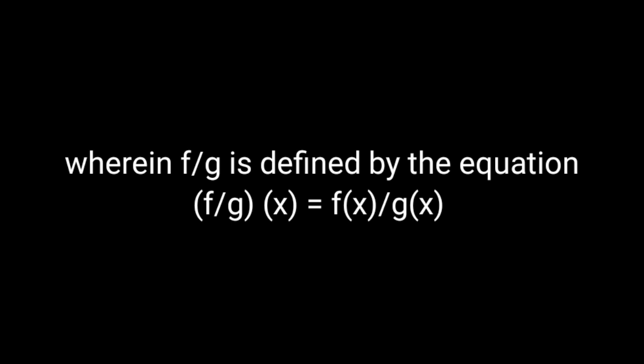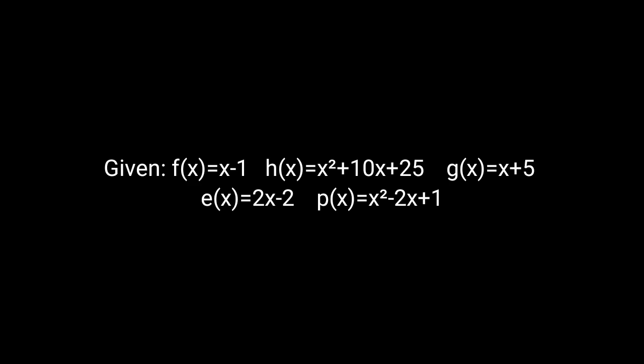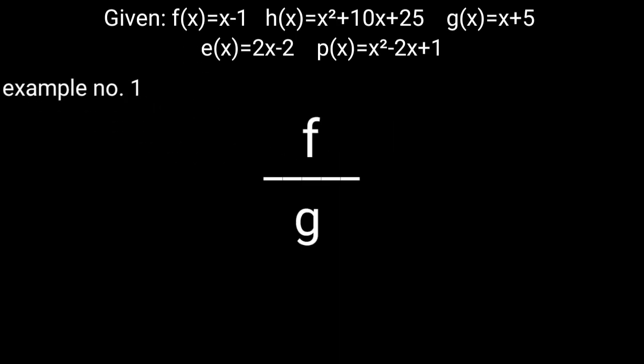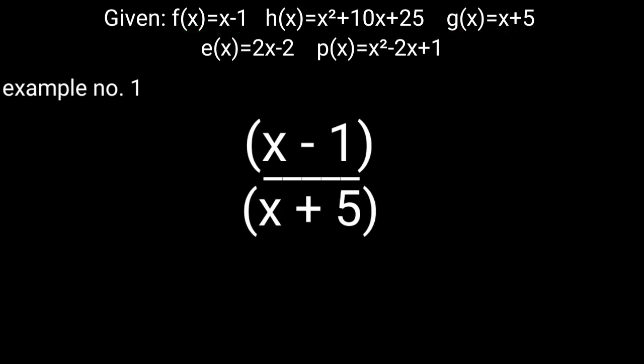The fourth operation on functions is the quotient of two functions, where (f/g)(x) = f(x)/g(x). Given f(x) = x − 1, h(x) = x² + 10x + 25, g(x) = x + 5, e(x) = 2x − 2, and p(x) = x² − 2x + 1. Example 1: f over g — substitute: (x − 1)/(x + 5). Since it cannot be factored further, that is the final answer.